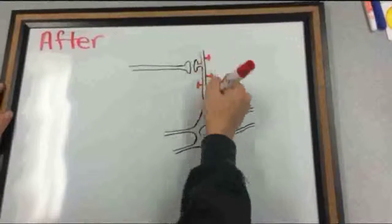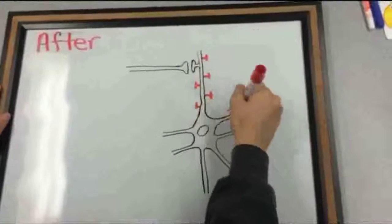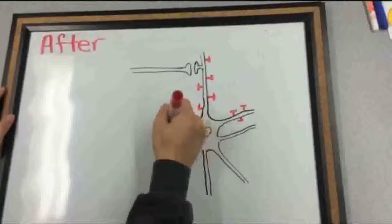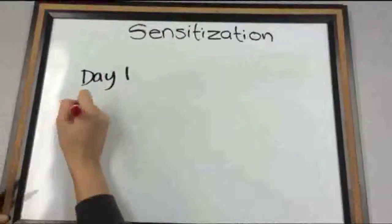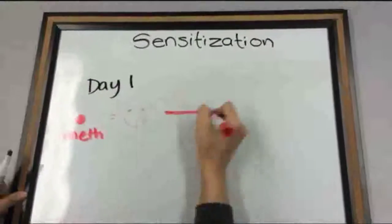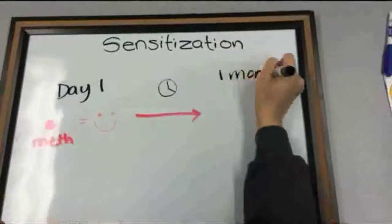The cells in the brain are also beginning to take on a different structure that allows them to be excited more easily. This is called sensitization, meaning the same dose of meth causes a more intense high with continued use.